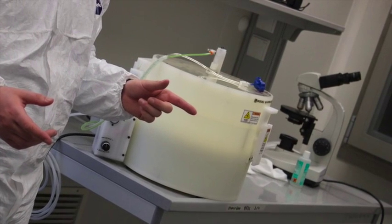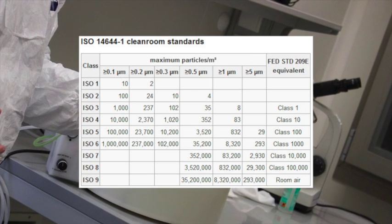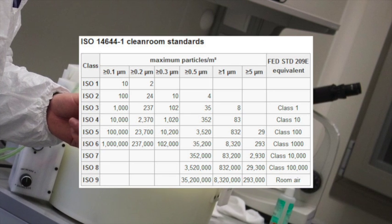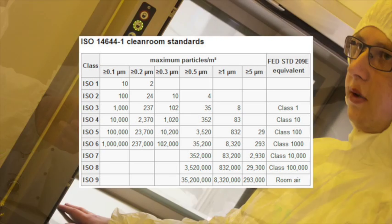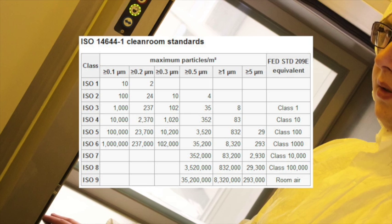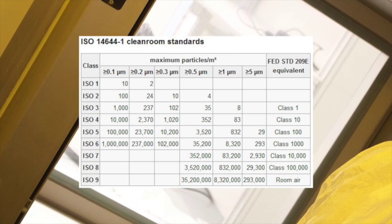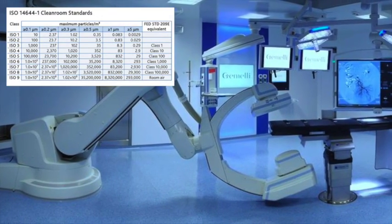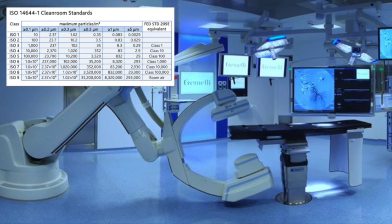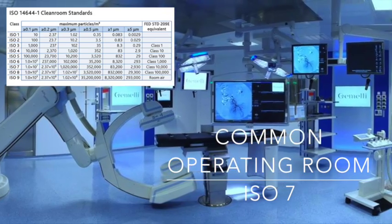The ISO 14644 standard establishes a classification of clean rooms depending on the number and size of particles per cubic meter. Prior to ISO 14644, technicians used the FED STD-209E standard. Although this standard is no longer supported, its classification is still very popular. To get an idea of cleanliness, a typical clean room for ISO 3 integrated circuit manufacturing is far cleaner than a hospital operating room, which would be classified as ISO 7.